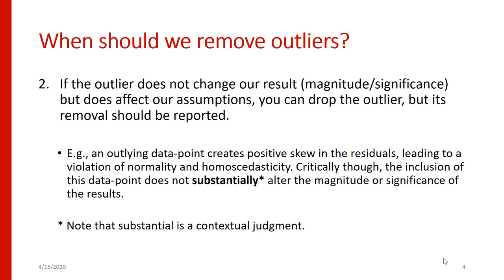The second situation is if we have an outlier that does not change our result in terms of its magnitude or statistical significance, but it does affect our assumptions. In that situation, you're going to want to drop that outlier, but as always, its removal should be reported. For instance, if you have an outlying data point that creates positive skew in your residuals, this might lead to a violation of our normality or homoscedasticity assumptions. If this data point doesn't really change your result one way or another, we actually probably want to report the result with that outlier excluded, because our p-values are going to be more accurate the closer our assumptions are to being maintained. If it's one data point out of 100, we probably want to err on the side of having those more accurate p-values and drop that one data point.